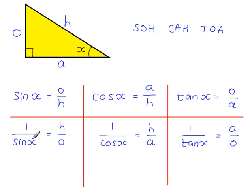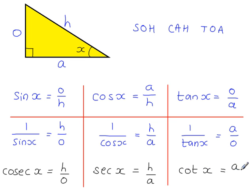1 over sin X is called the cosecant or cosec of angle X, which is equal to H over O. 1 over cos X is referred to as secant X or sec angle X, equal to H over A. And 1 over tan X is the cotangent of X or cot X equal to A over O.